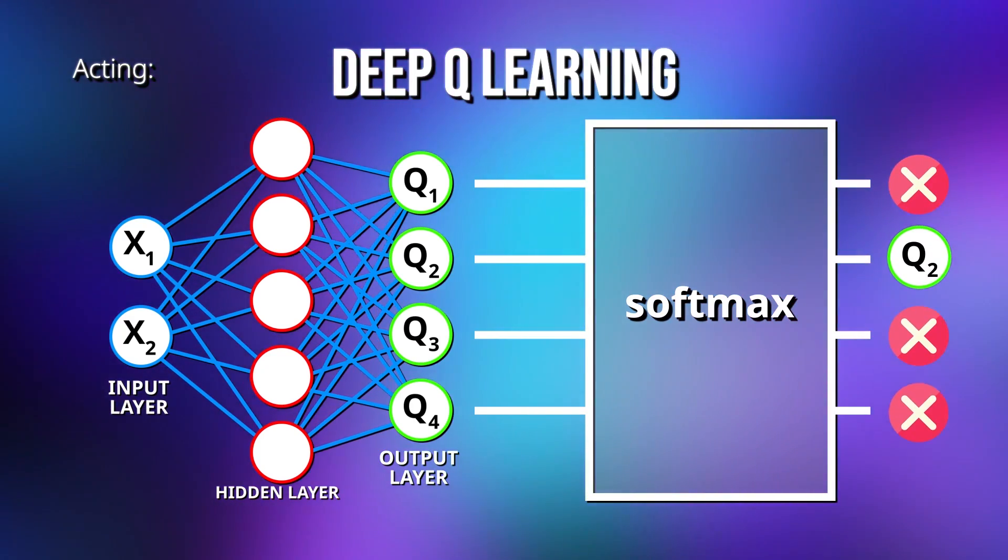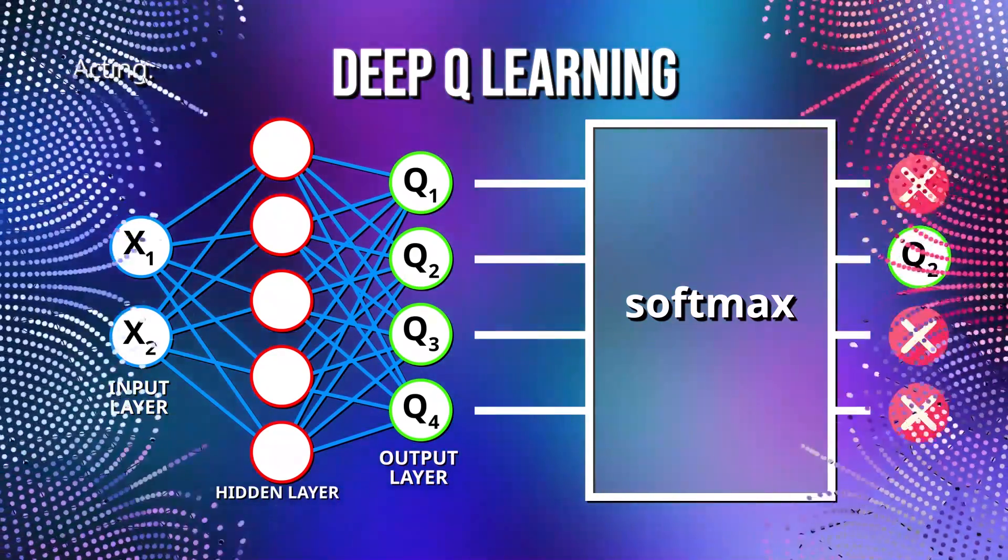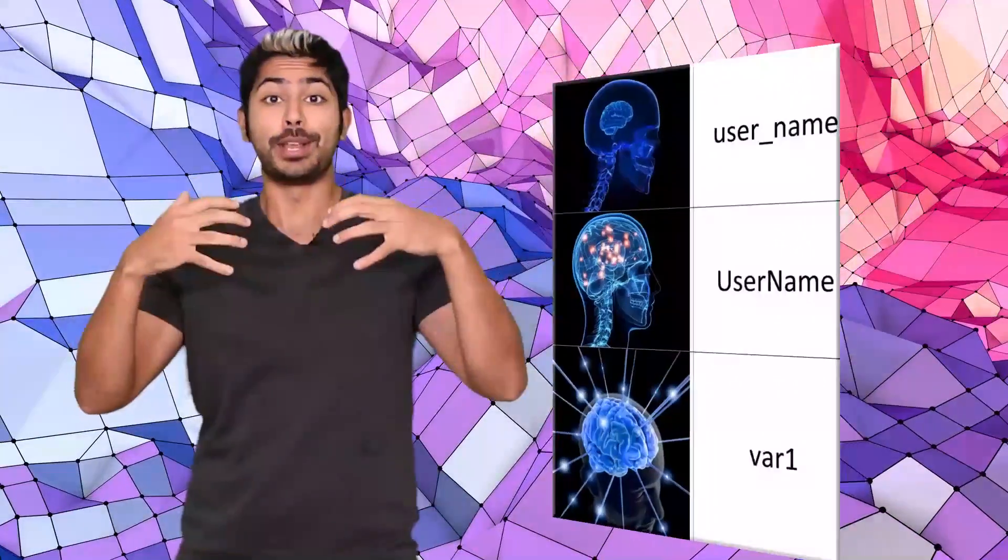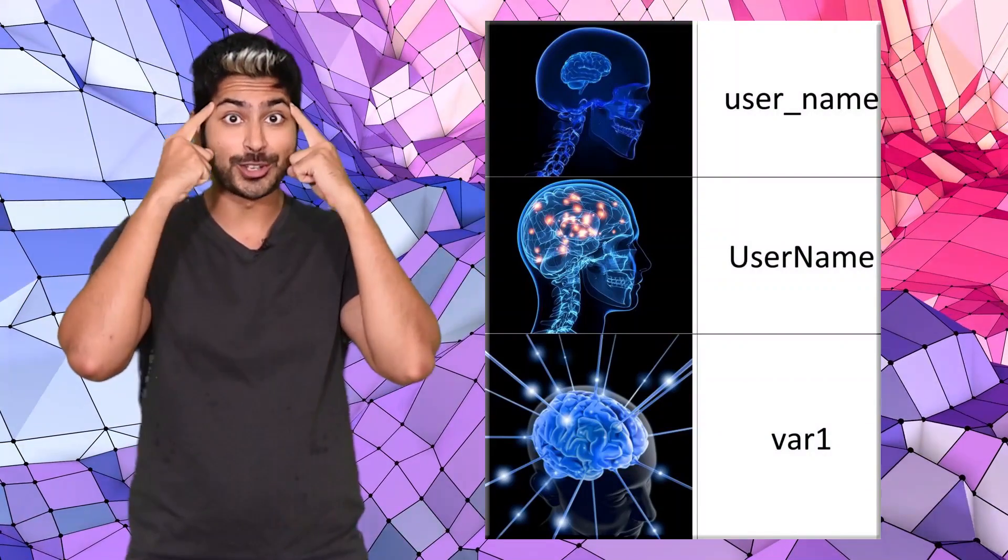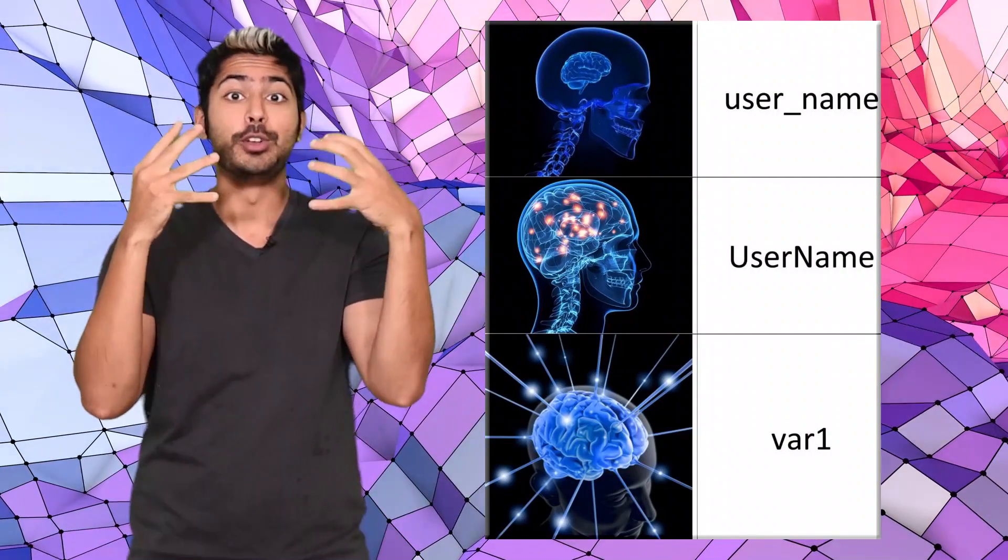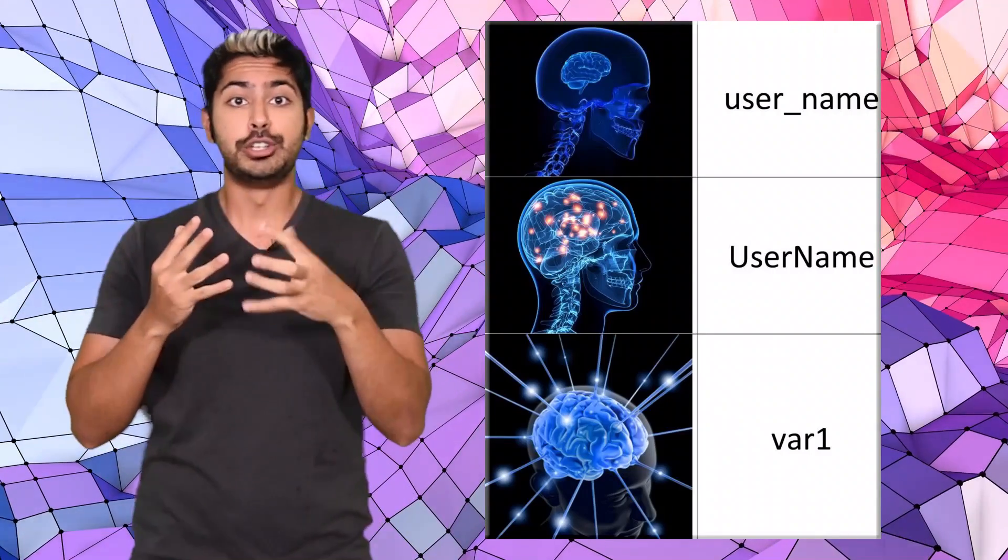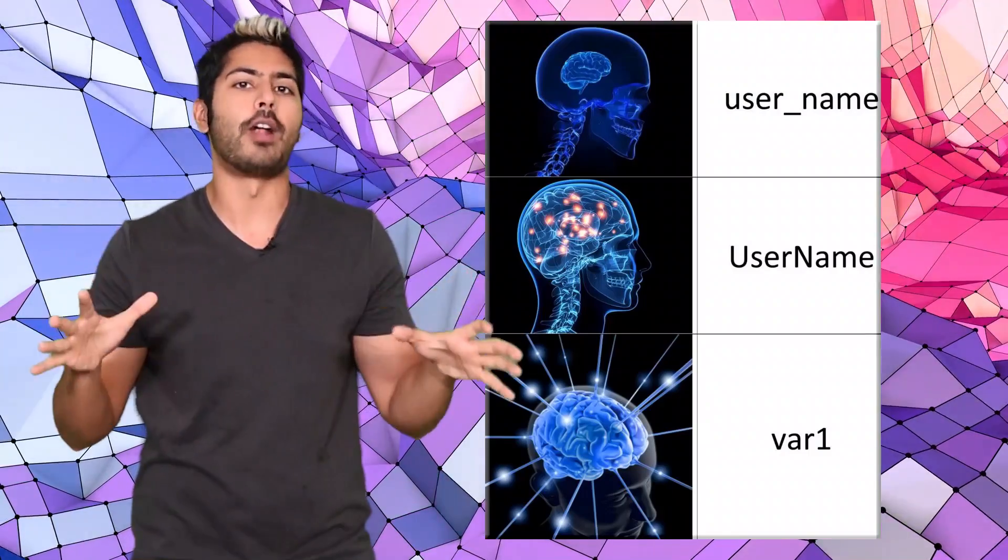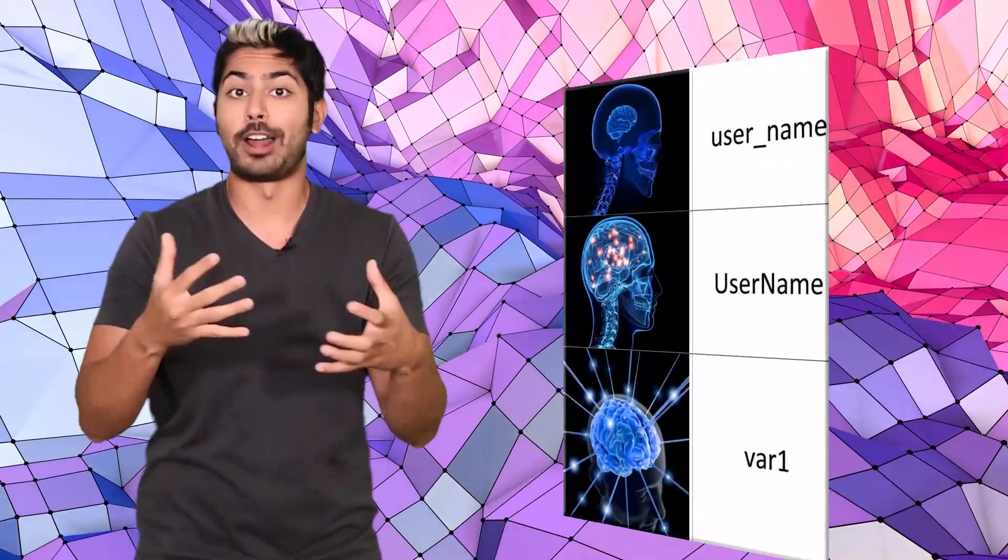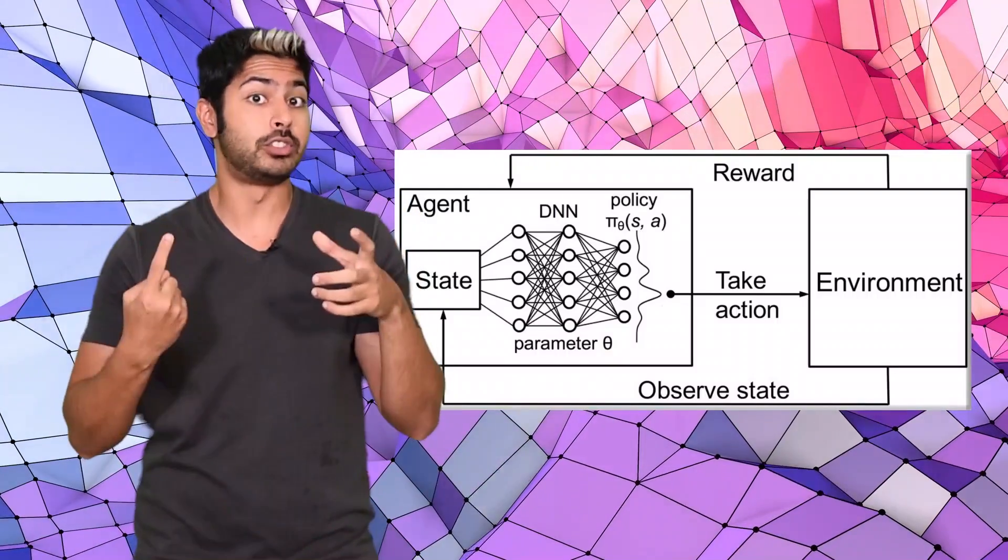We can call this whole process deep reinforcement learning, and more specifically, deep Q learning. Now let's bring this theory back to reality. You and I have neural networks in our head. Networks of neurons are firing in endlessly different combinations to approximate functions that help us perform a wide variety of tasks as we go about our lives.